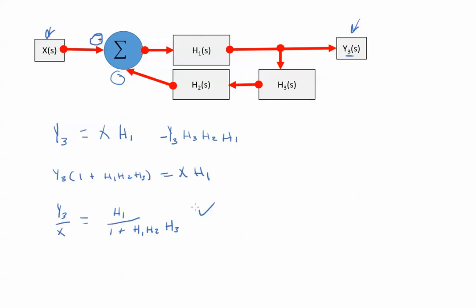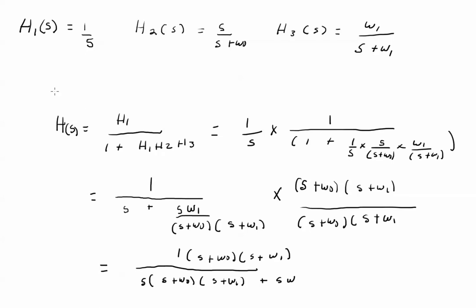Now in the homework we have different functions. I have h1, an integrator. h2 is a high-pass filter and h3 is a low-pass filter. This was the equation we just derived: h1 is 1 over s, 1 plus h1 times h2 times h3: 1 over s, high-pass, low-pass.